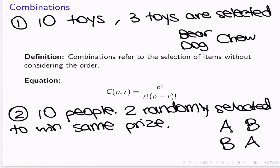Whereas if it were different prizes, that's when it would be permutations — because then you probably care what order you were selected in. What if one prize was a vacation and one was a pencil? In that case, you probably do care which order you're selected in because those are two very different prizes. So if it's a certain number of people selected to win the same prize, we wouldn't care about the order. But if it's different prizes, then we care about the order, because switching the order switches who gets what prize.